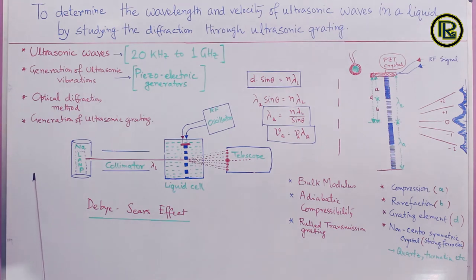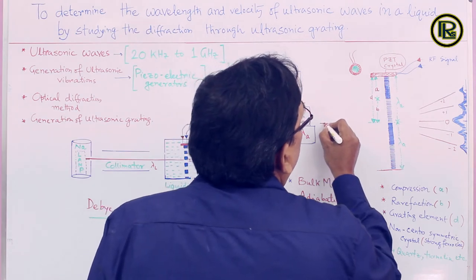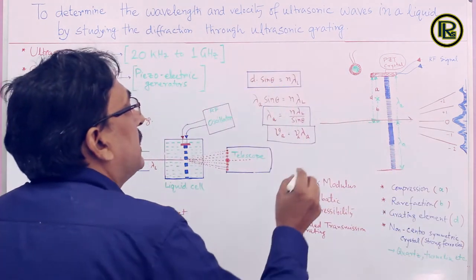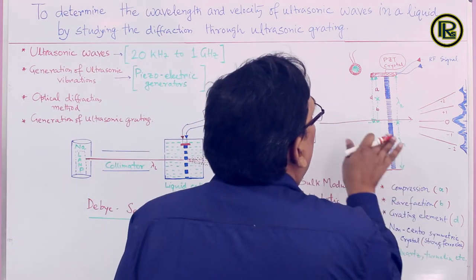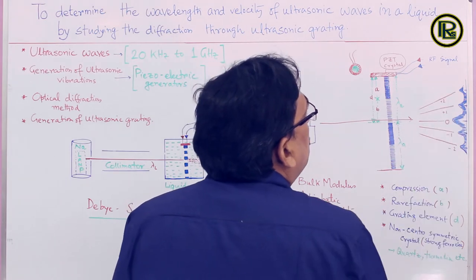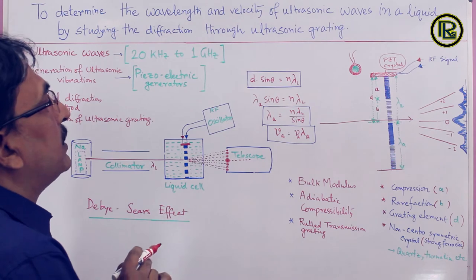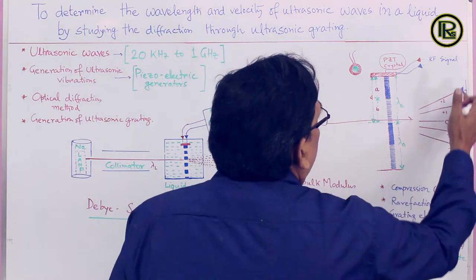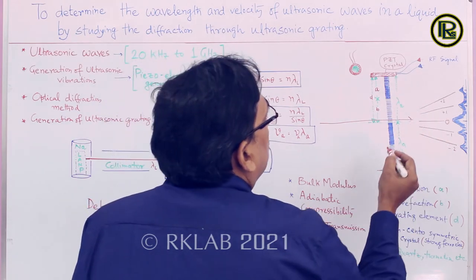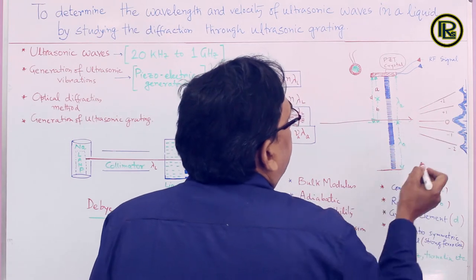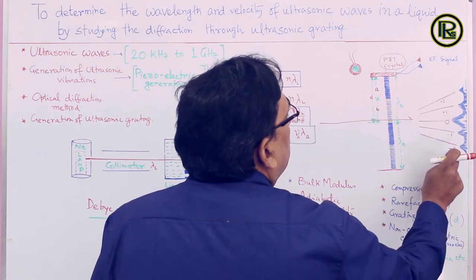If a light wave is allowed along the direction perpendicular to the ultrasonic grating, the light will pass through the medium and give rise to diffraction phenomena similar to a plane transmission grating. On the screen, we will see a diffraction pattern with a 0th order, and above the 0th order, 1st and 2nd orders on both sides: +1st, −1st, +2nd, −2nd.